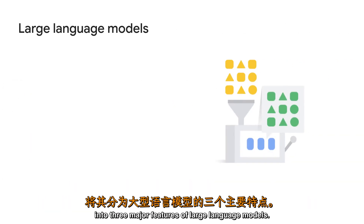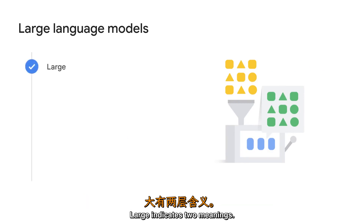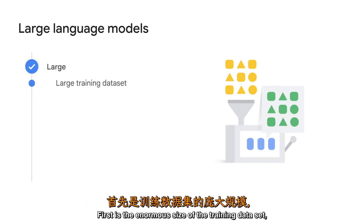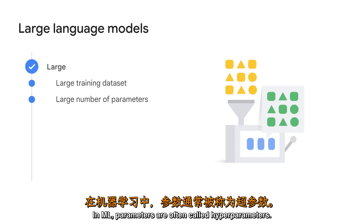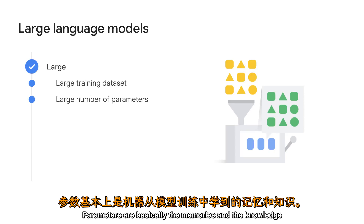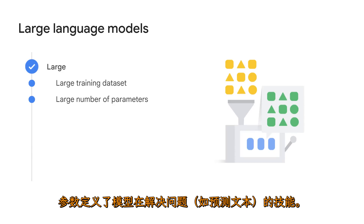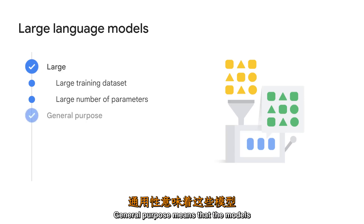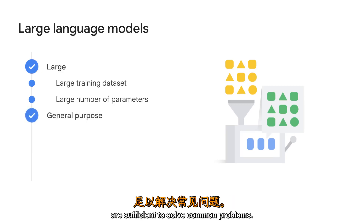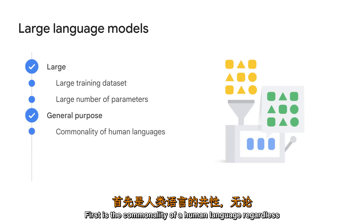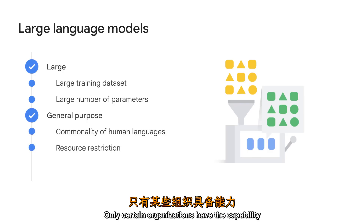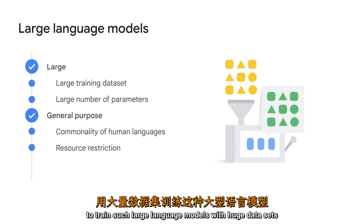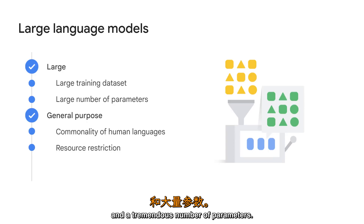Let's further break down the concept into three major features of Large Language Models. Large indicates two meanings. First is the enormous size of the training dataset, sometimes at the petabyte scale. Second, it refers to the parameter count. In ML, parameters are often called hyperparameters. Parameters are basically the memories and the knowledge that the machine learned from the model training, and they define the skill of a model in solving a problem, such as predicting text.